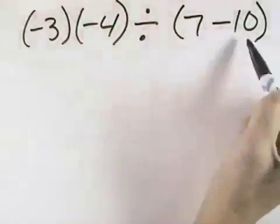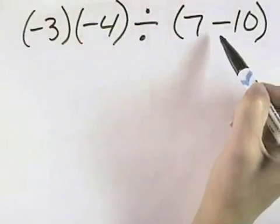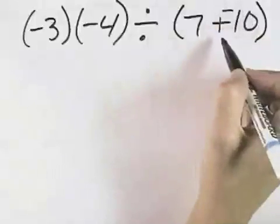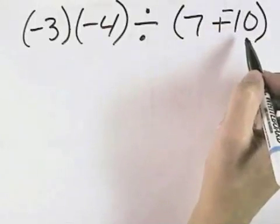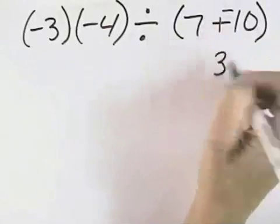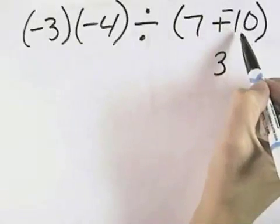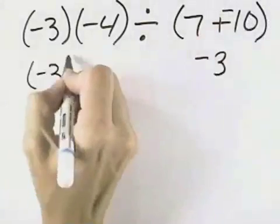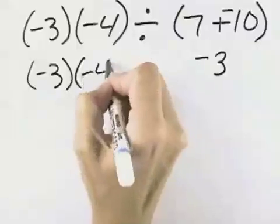We'll start with the 7 minus 10. Since it's subtraction, we'll change it to addition of the opposite. So that's 7 plus a negative 10. Since they're opposite signs, we take the difference between those two numbers, which is 3. And because the 10 has the larger absolute value, we have a result of negative 3.